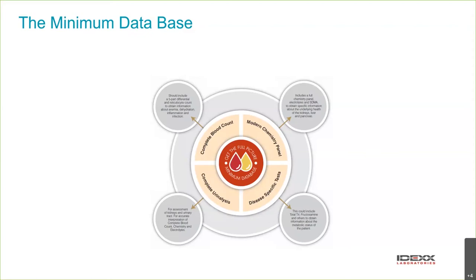Disease-specific testing is not done on every patient — it's done based on the patient's signalment and presenting complaints. For example, a cat over seven or eight years with appropriate clinical signs gets a T4. A patient with gastrointestinal diarrhoea should have faecal parasitology. Maybe a PCR, or for urinary tract signs a urine culture, or proteinuria a UPC ratio — these are only done as indicated and aren't a routine part of the minimum database in every patient.